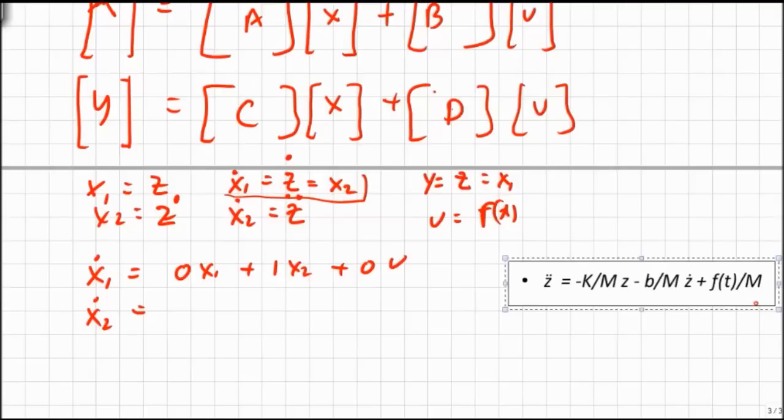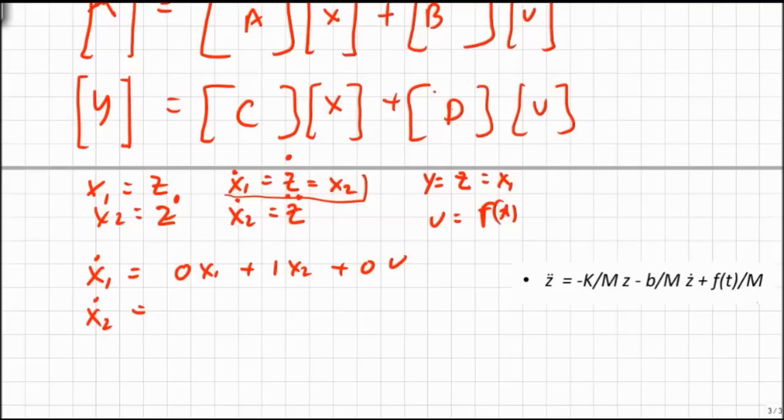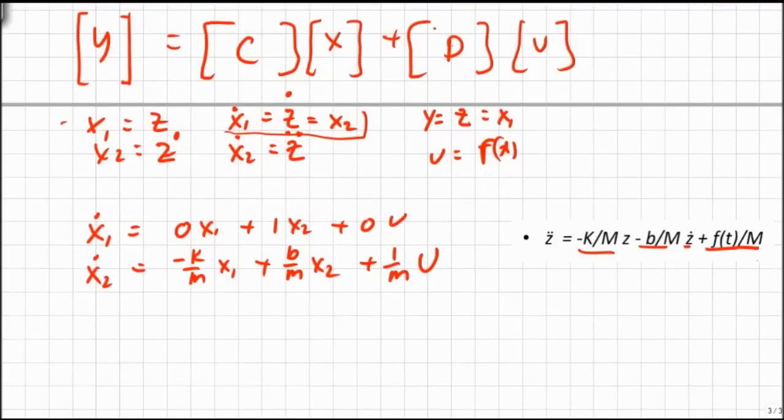Okay, so I've got minus K over M times Z, and I've got to go back to a pen here. Yeah, K over M times Z, and Z is our X1, so I've got minus K over M times X1, plus minus B over M times Z dot, well, Z dot is our X2, plus B over M X2, and then I have 1 over M times our input U, which is F of T, is U, okay?